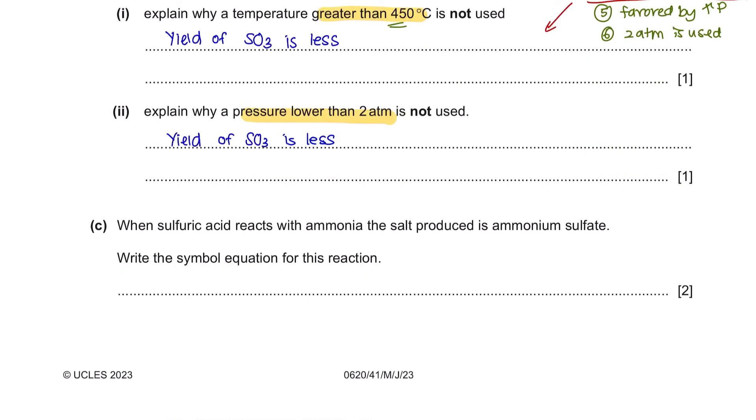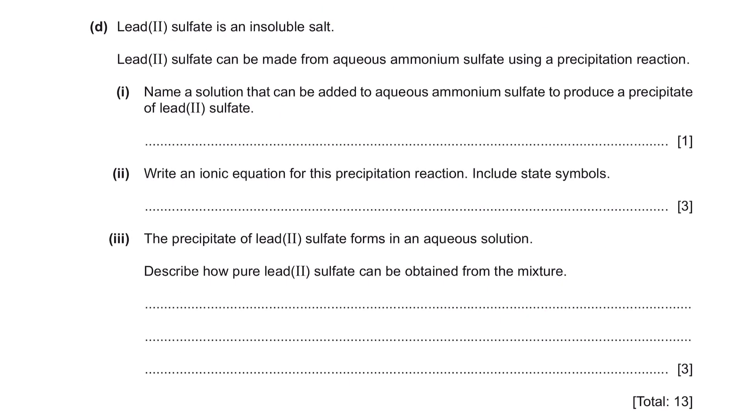Question C. When sulfuric acid reacts with ammonia, the salt produced is ammonium sulfate. Write the symbol equation for this reaction. When sulfuric acid reacts with ammonia, it produces ammonium sulfate. We know that ammonium sulfate consists of ammonium NH4+ and sulfate SO4 2-. Combined together, the charge from their number would cross on the other side, resulting in (NH4)2 and SO4. Next is to check whether or not this equation is balanced. You have 2 nitrogens over here, so we're going to put 2 here. And the rest are balanced.